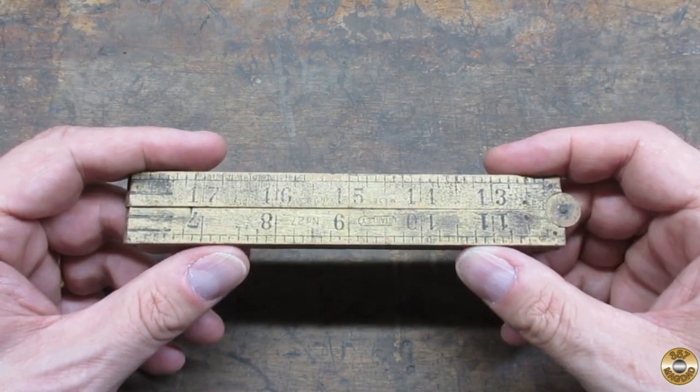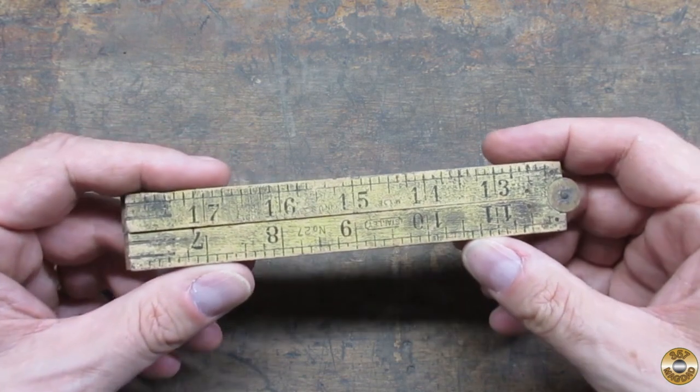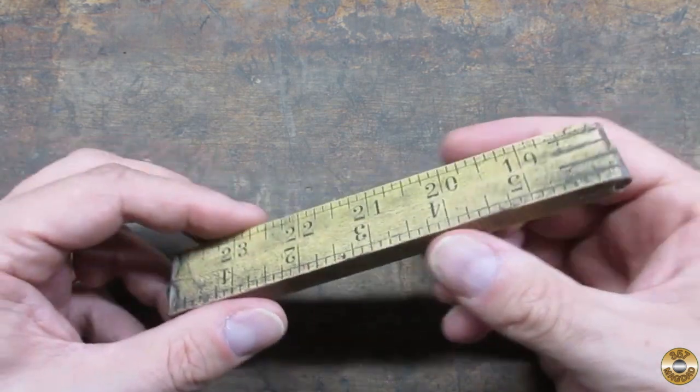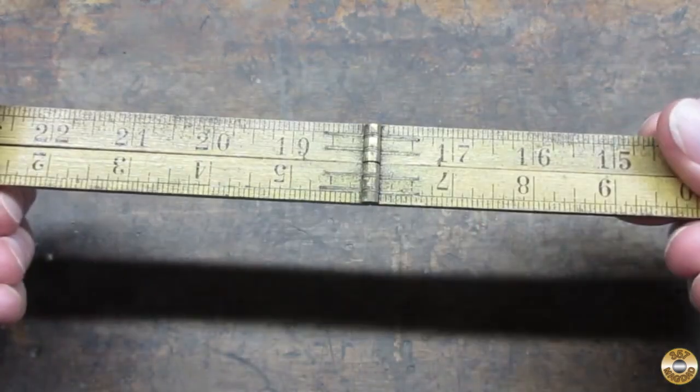Here's the ruler after two applications of oxalic acid. It seemed improved, but I still wasn't satisfied.